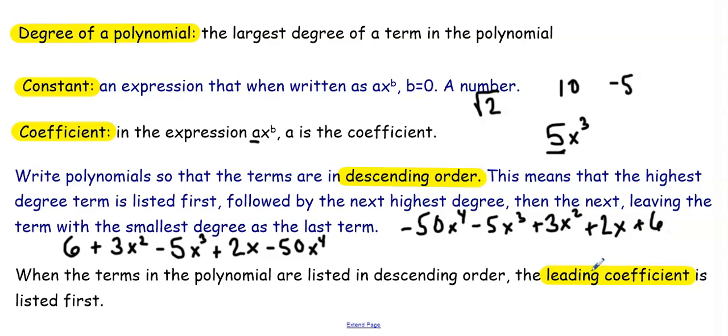When the terms of a polynomial are listed in descending order, the leading coefficient is listed first. So for this polynomial example, negative 50 is the leading coefficient.